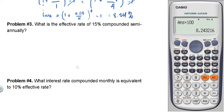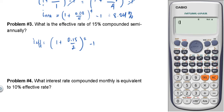I effective equals 1 plus 0.15 over 2 (since semi-annual means M = 2), raised to 2, minus 1. Computing: 1 plus 0.15 over 2, squared, minus 1, equals 15.56%. So I effective is 15.56%.